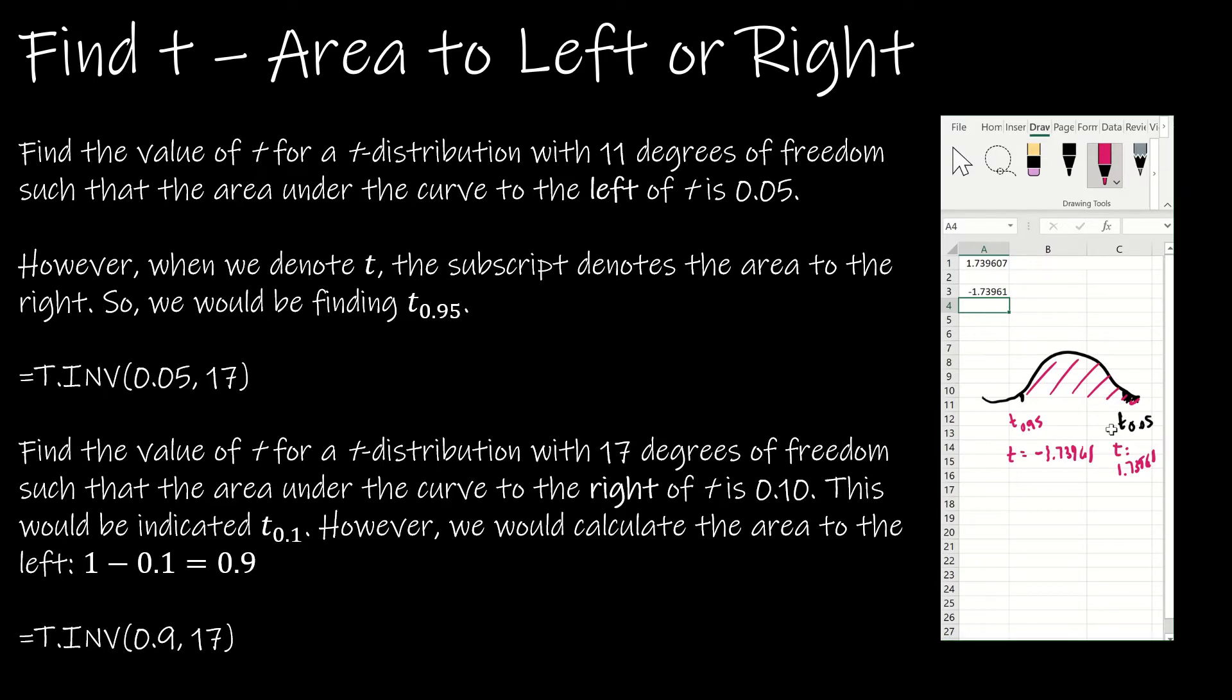I can always just use the 0.05, or I could have used the 0.95 but then put a negative in front, and notice that I get the negative value. So whichever way makes the most sense to you.